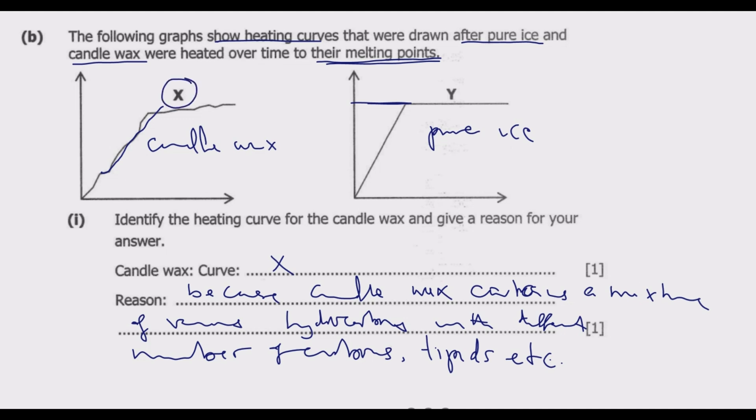Question B(b)(ii): Give one effect of impurities on the melting and boiling points of a pure substance.